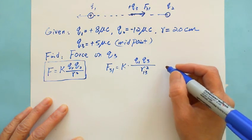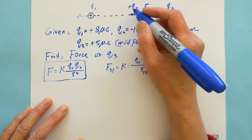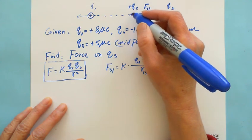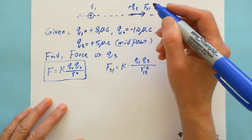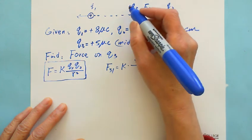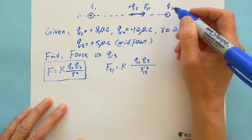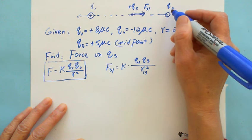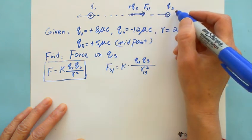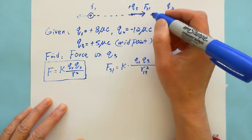The other force: Q3 is positive put in the midpoint. There is another force from Q2 acting on Q3. Because Q3 is positive and Q2 is negative, that's why they attract each other.